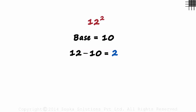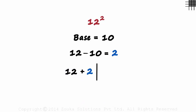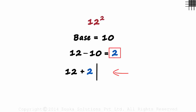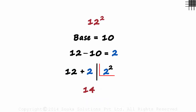After these steps, we make a partition. On the left, we write the sum of the number and the difference — that will be 12 plus 2. And on the right, we simply square the difference, which will be 2 squared. 12 plus 2 is 14 and 2 squared is 4. We have the answer: 12 squared is 144.